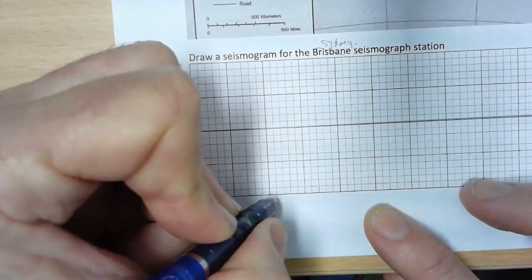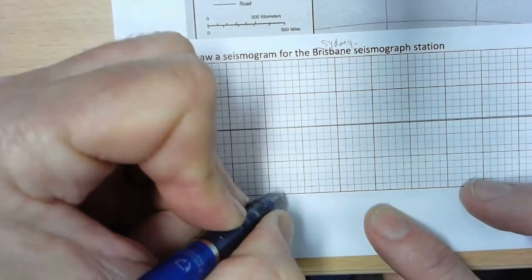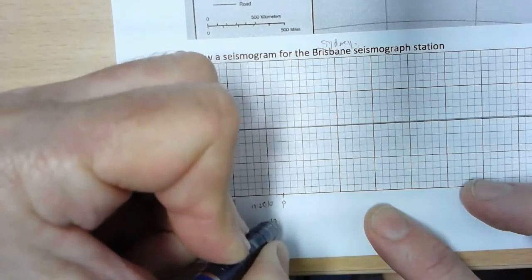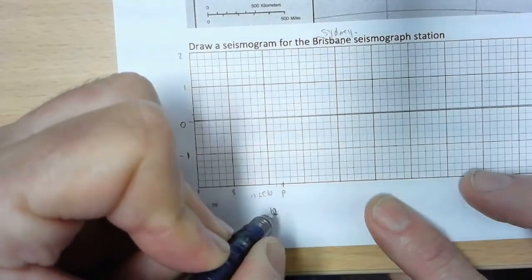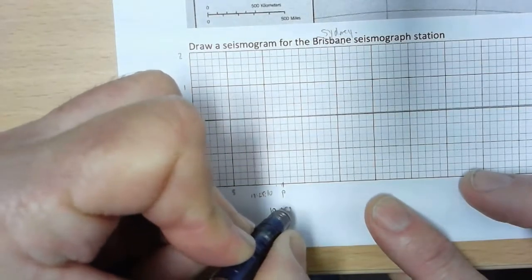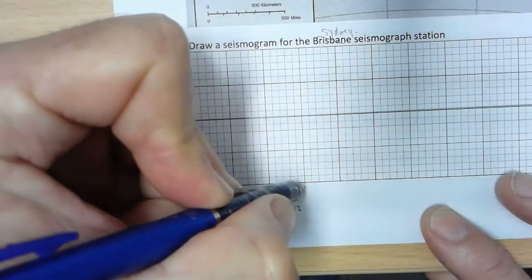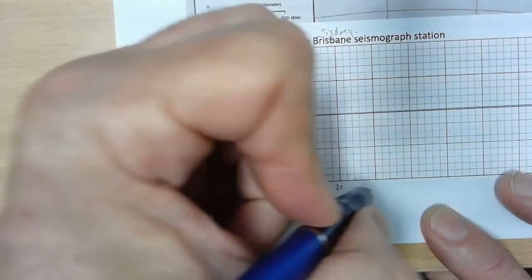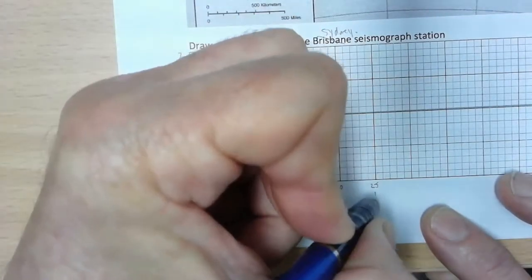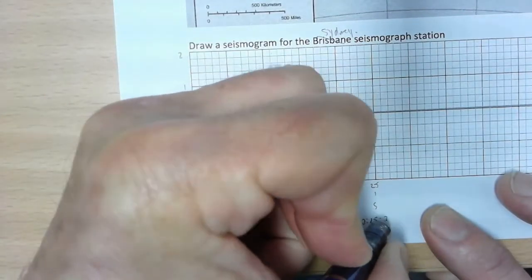Now, the arrival of the P wave was 10:25 and 12 seconds. So here's the arrival of the P wave: 10:25:12. And then 13, 14, 15, 20, and 25. So the arrival of the S wave was 10:25:25.